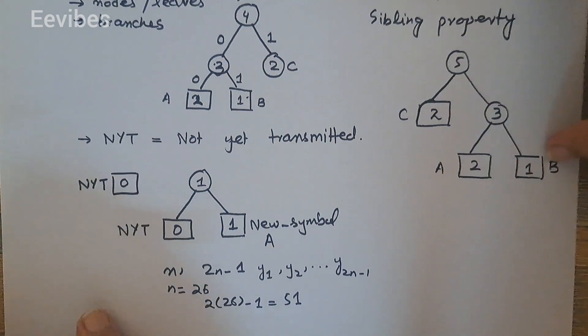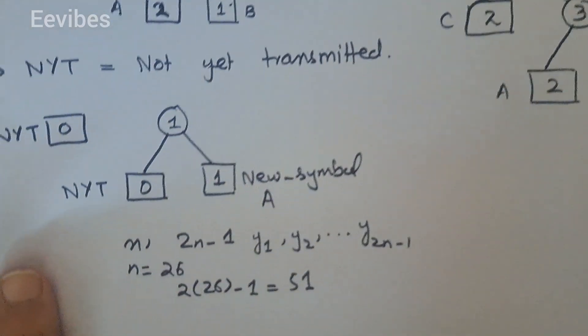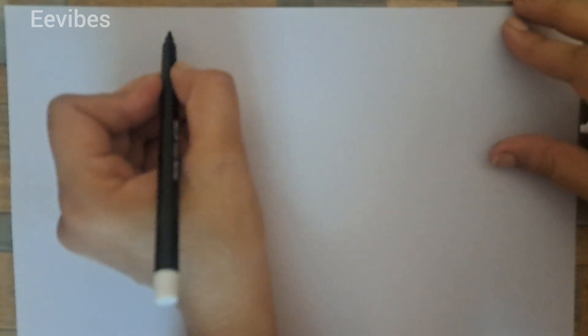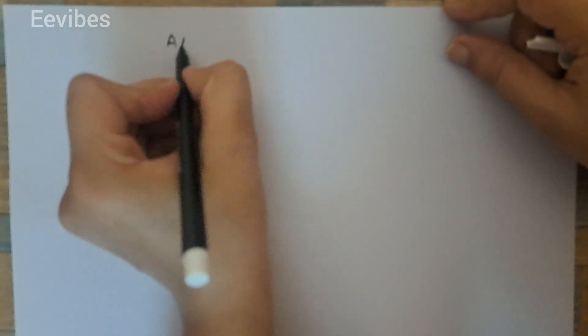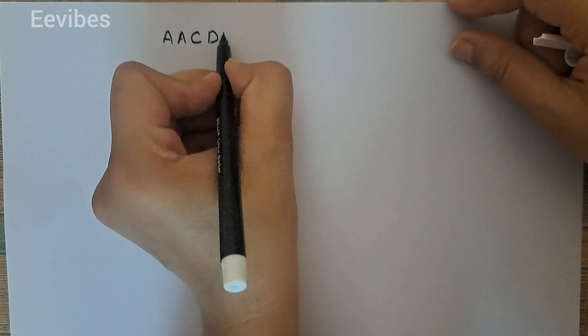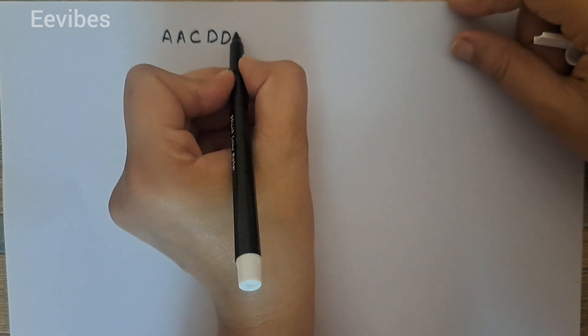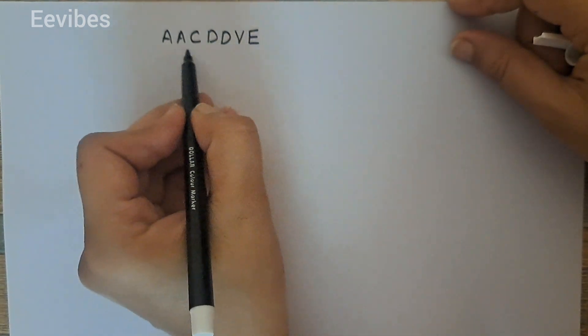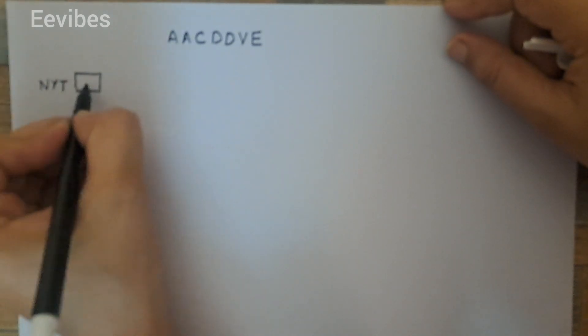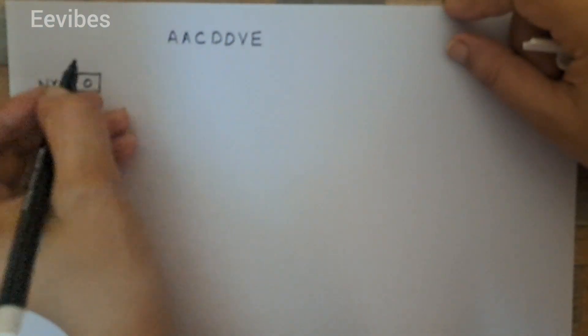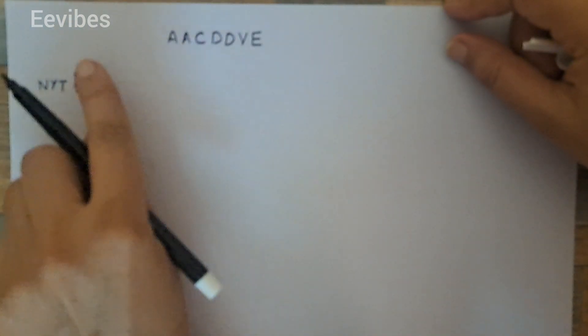Let's start with an example. We want to encode a sequence of symbols using adaptive Huffman coding. First we generate a binary tree, then assign the code — the code assignment procedure will be discussed in the next lecture. The sequence we want to encode is: a, a, c, d, d, v, e. We always start from the NYT symbol, so here we have the Not Yet Transmitted node whose weight is zero and node number is 51 (for n equals 26).